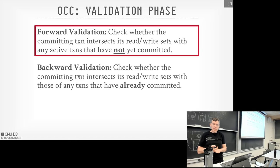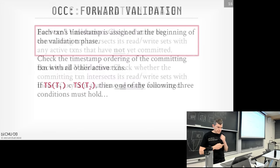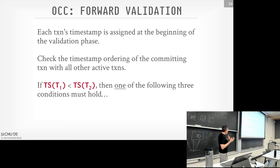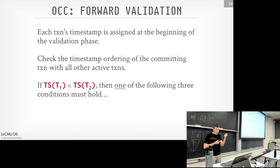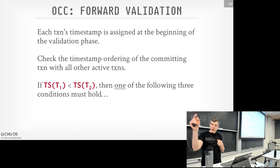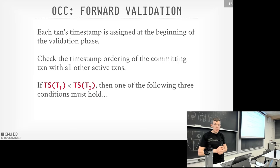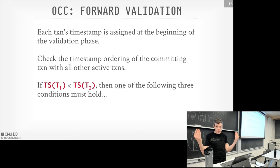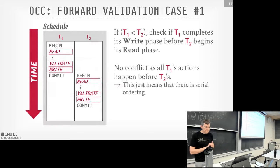With forward validation, we assign a timestamp to every transaction when they enter the validation phase. If our transaction is going to commit, one of three conditions has to hold for every other transaction that is running at the same time. You go look in their read/write sets, their private workspaces, and see what work they've done. For each transaction, as long as one of these three cases is true, you're not conflicting with that particular transaction. If you don't conflict with all possible active transactions, you're allowed to commit.